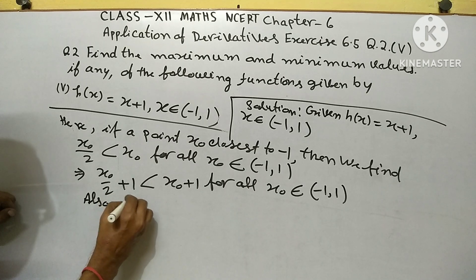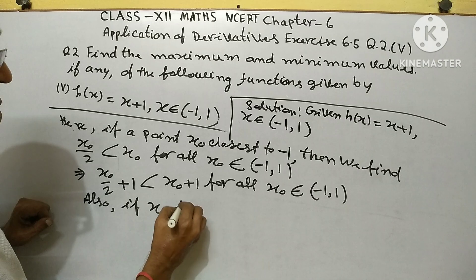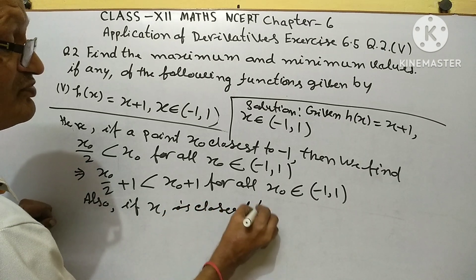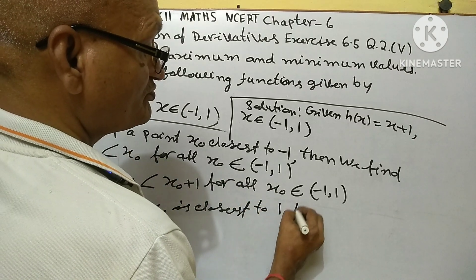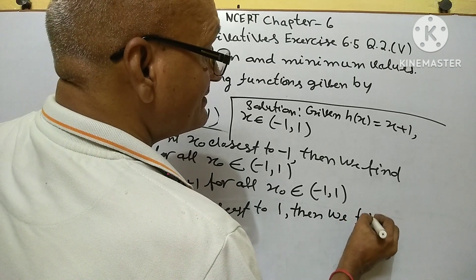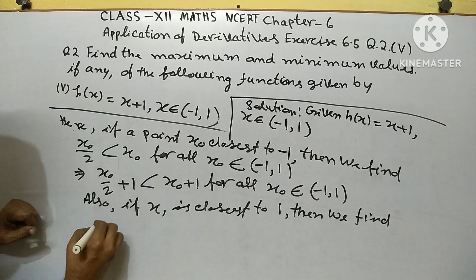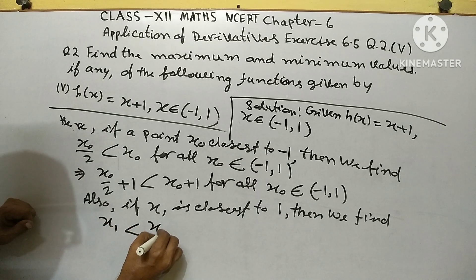And so, if x_1 is closest to 1, then we find x_1 is less than x_1 plus 1 over 2.